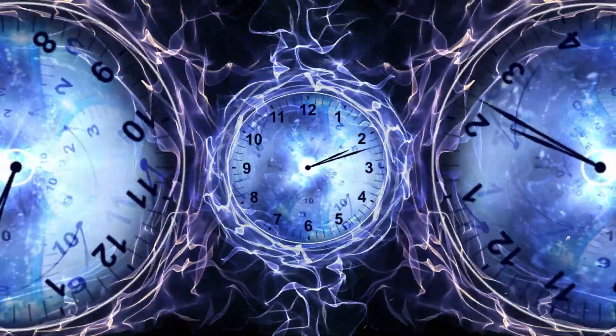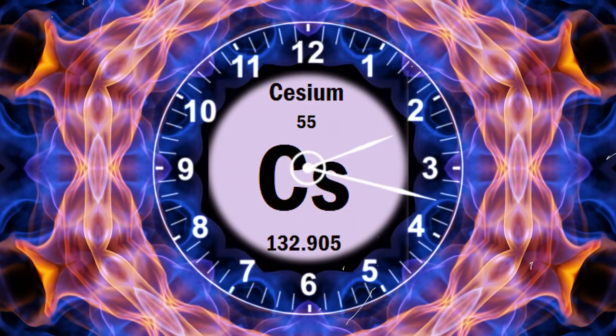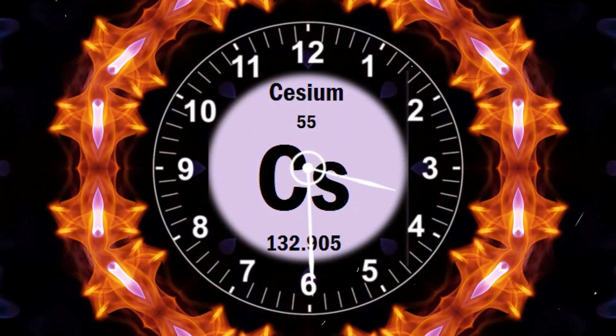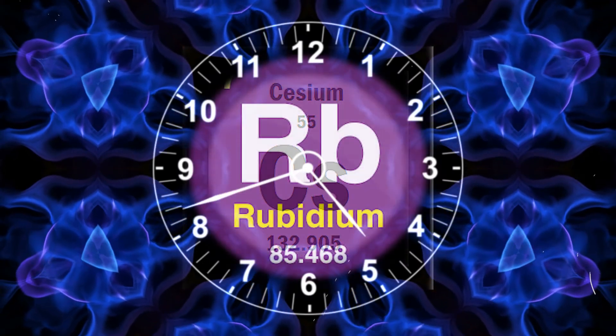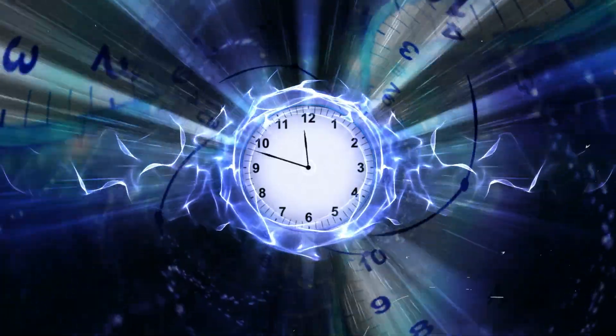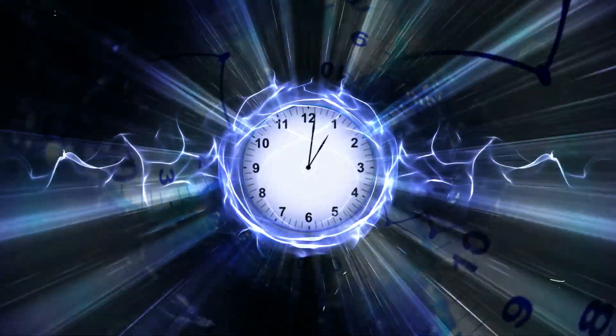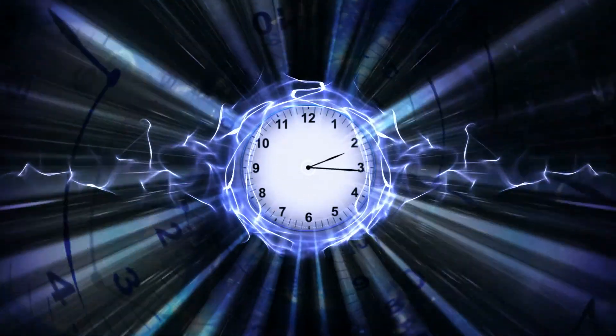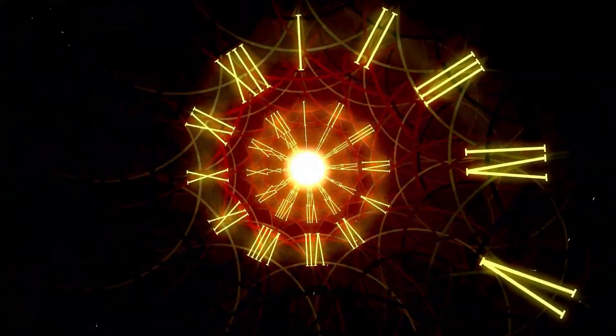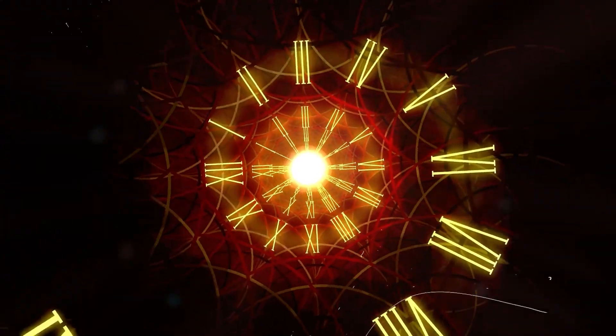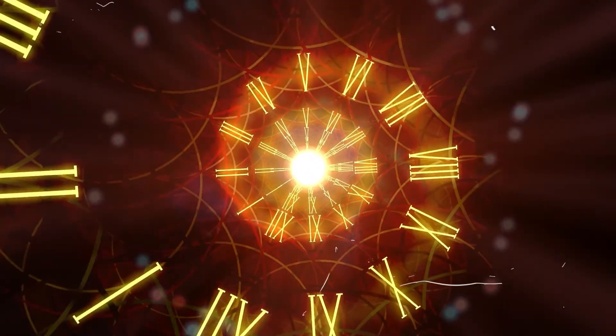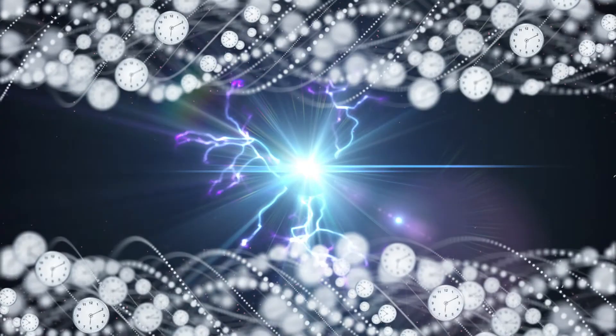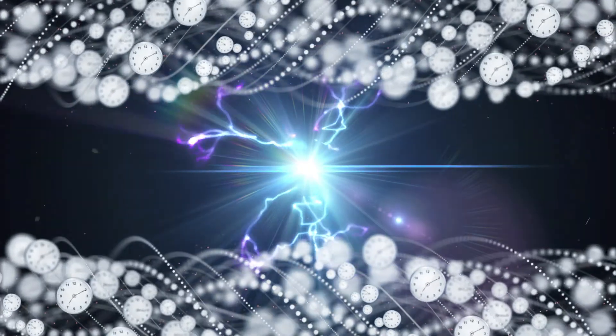So how exactly do atomic clocks harness this atomic resonance to measure time? The process begins by selecting specific types of atoms like cesium-133 or rubidium, as these atoms resonate at very well-defined frequencies, making them ideal for precise timekeeping. The atomic clock exposes the chosen atoms to microwaves, causing them to absorb or emit radiation.